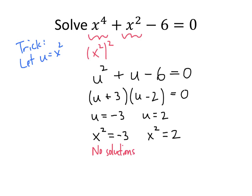But my other solution, x squared equals 2, I certainly can get solutions there. If I take the square root of both sides, I get 2 solutions plus or minus the square root of 2. And those are my solutions to my original equation. And so I'm done.